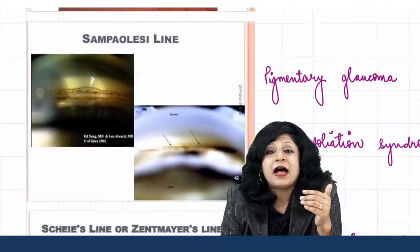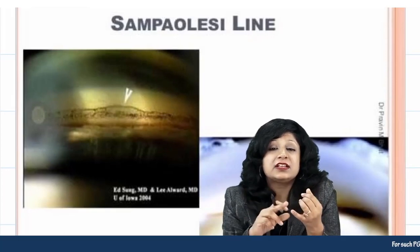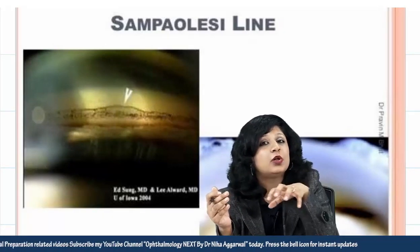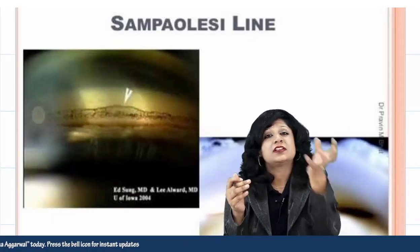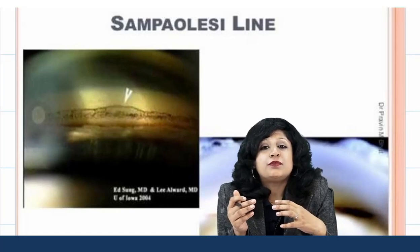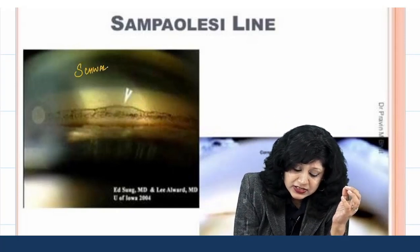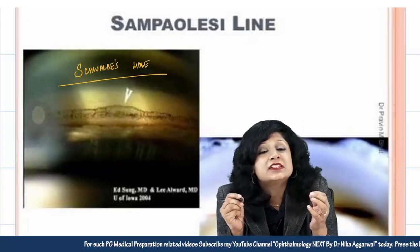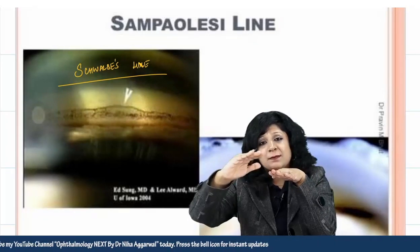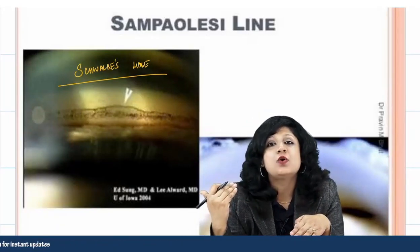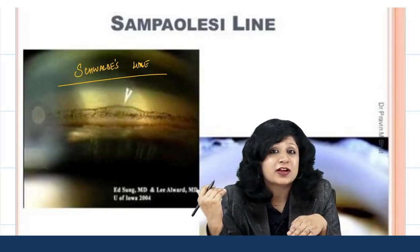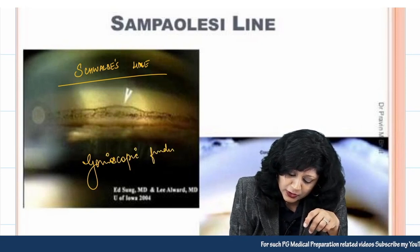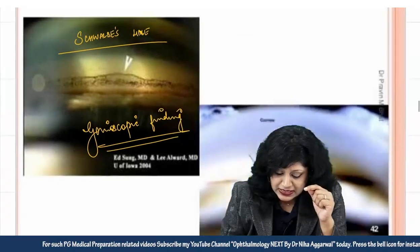Next is Sampaolesi's line. In pseudo-exfoliation syndrome and pigmentary glaucoma, wherever you have pigment dispersion, it occurs in all parts of the anterior segment, especially the trabecular meshwork and the angle of the anterior chamber. One structure in the angle is Schwalbe's line — the prominent end of Descemet's membrane of the cornea. When you have pigmentation along Schwalbe's line, that is called Sampaolesi's line. This is a gonioscopic finding, as it cannot be seen with the naked eye.